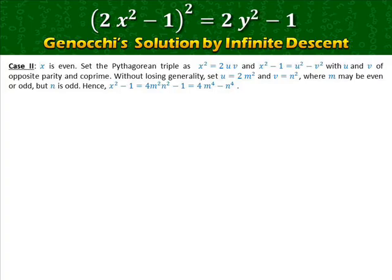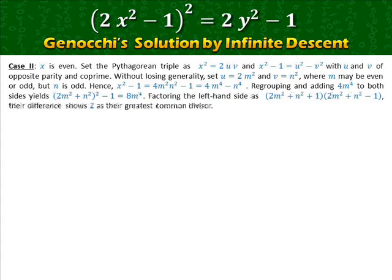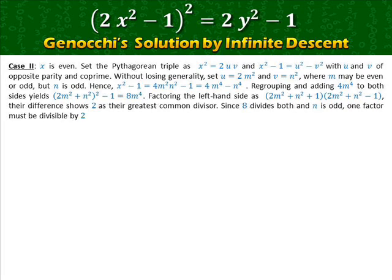This equals 4m⁴ − n⁴ after regrouping. Adding 4m⁴ to both sides yields (2m² + n²)² − 1 = 8m⁴. Factoring the left-hand side, the difference shows 2 as the greatest common divisor. Since 8 divides the product and n is odd, one factor must be divisible by 2 and the other by 4.